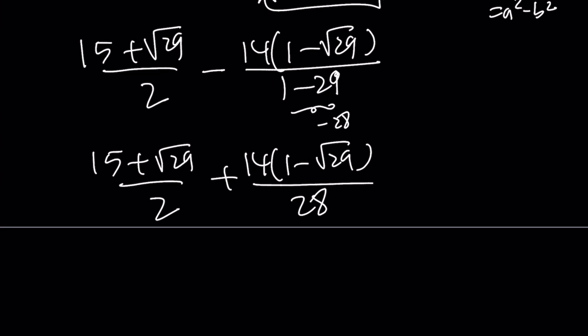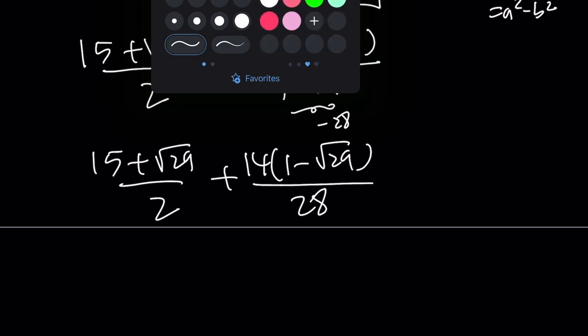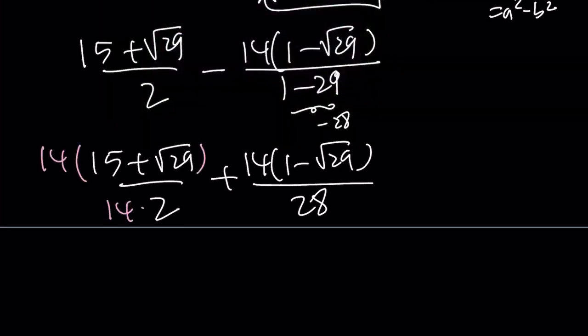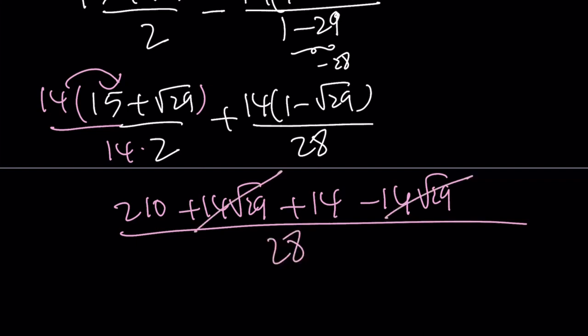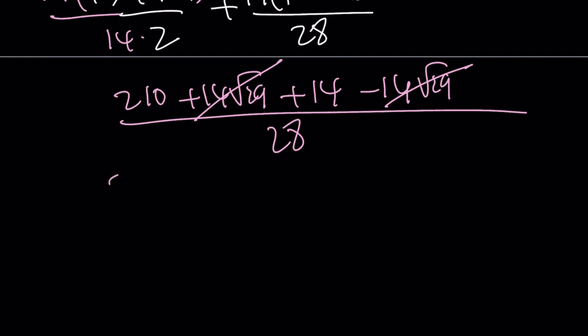Obviously, at this point, we're supposed to make a common denominator. So let's go ahead and multiply the first one by 14. That's going to give us the following. Let's go ahead and distribute. 14 times 15 is 210, plus 14 root 29. And the second part is going to give us plus 14 minus 14 root 29. All of that is divided by 28. 14 root 29 cancels out. 210 plus 14 is 224 divided by 28. And we're going to go ahead and simplify it. If you divide, you're going to get 8. Or if you don't see it right away, you can just divide by 2, divide by 2, divide by 2, so on and so forth. But that's the answer.